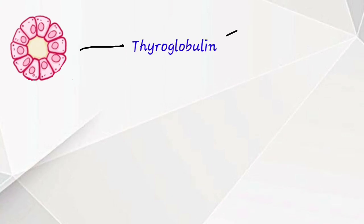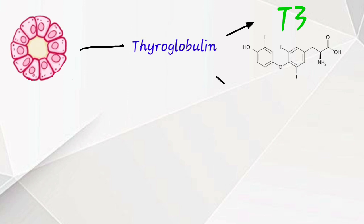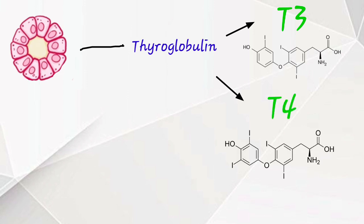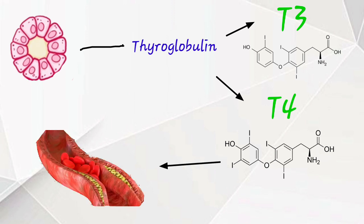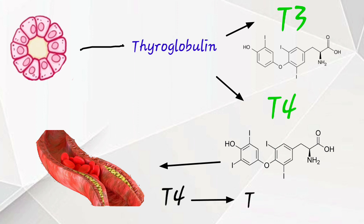Follicular cells produce the protein thyroglobulin, containing hormones T3, that is triiodothyronine, and T4, thyroxine. These hormones are released into the blood and attach to plasma proteins. T4 is converted to T3 mostly.